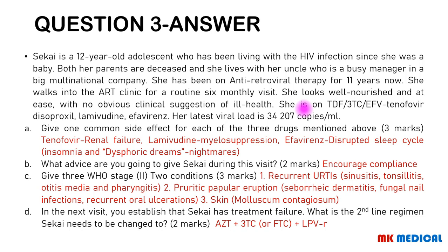Three WHO stage 2 conditions: recurrent upper respiratory tract infections — sinusitis, tonsillitis, otitis media, pharyngitis; pruritic papular eruptions; seborrhoeic dermatitis; fungal nail infections; recurrent oral ulcers; and skin manifestations like molluscum contagiosum. In the next visit you establish treatment failure. Since this female has been on treatment for 11 years, you'd expect her viral load to be suppressed to at least less than 400 copies — but it's 34,207, meaning she has virological failure. Change her to AZT, 3TC or FTC, plus boosted lopinavir/ritonavir (lopinavir/ritonavir).